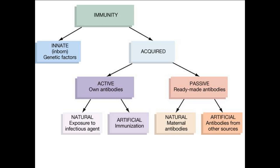Antibodies are made from B lymphocytes, and B lymphocytes differentiate into two types: memory and plasma. The plasma cells are the ones that pump out the antibodies, and the memory cells are the ones that stay in the system, so you have the memory cell there for reinfection with the same type of pathogen.